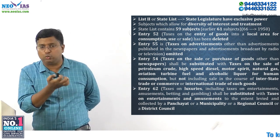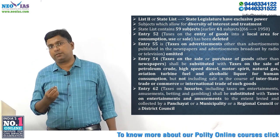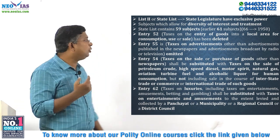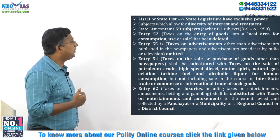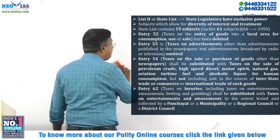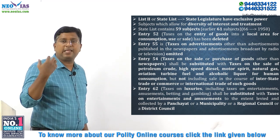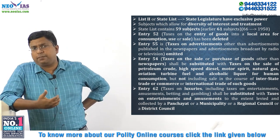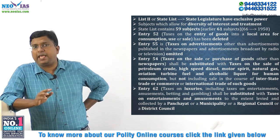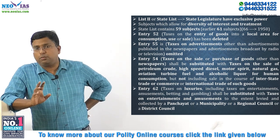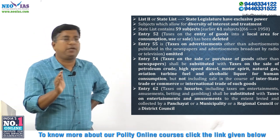Now coming to the State List or List 2. In relation to the State List, state legislatures have the exclusive power to make laws with respect to the State List. Most of the subjects in the State List have a diversity of interest — they are not of common interest but require diversity of treatment, which is why states can apply their own laws.